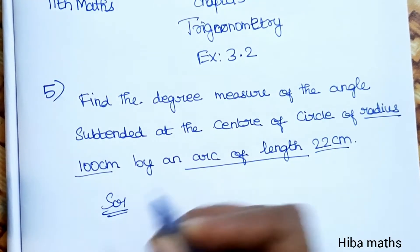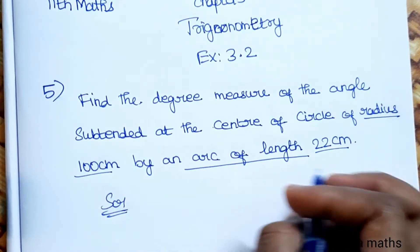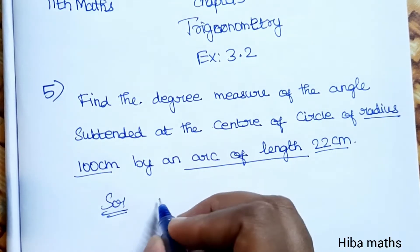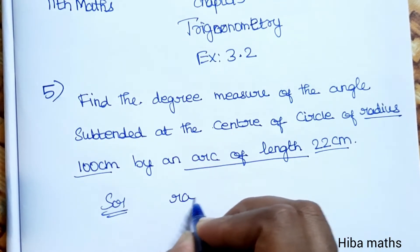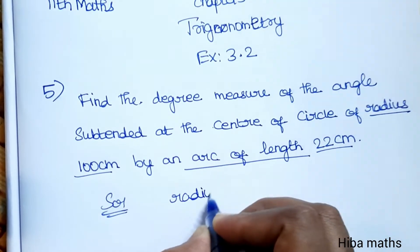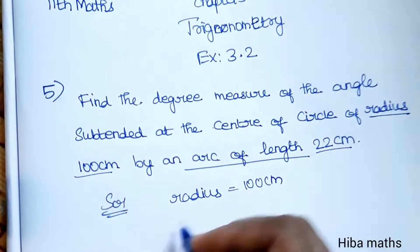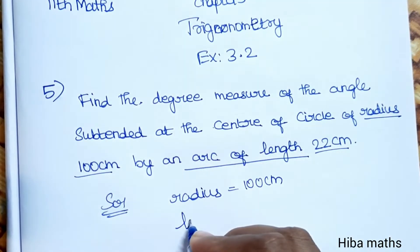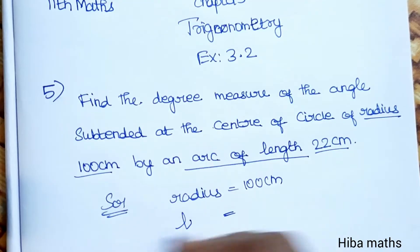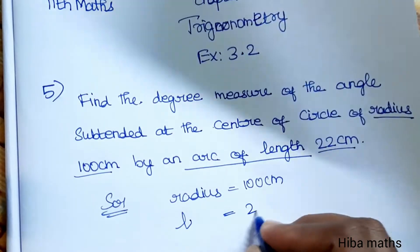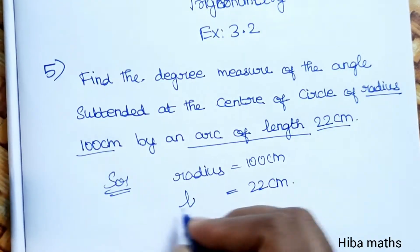It is very easy, direct and easy to solve. In the solution, the radius is 100 cm and the length of the arc is 22 cm.